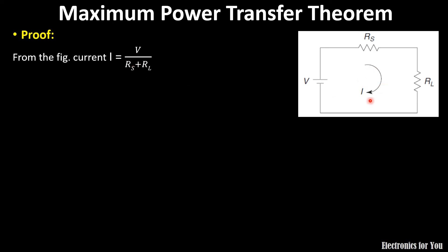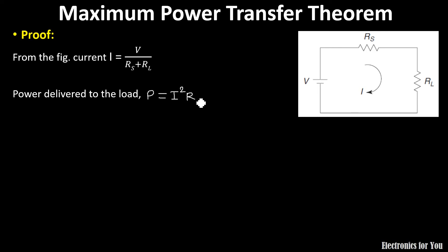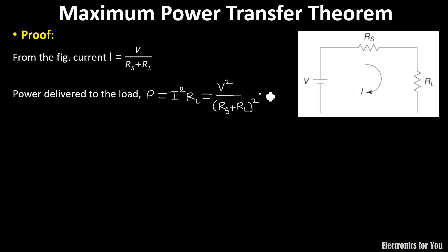Now further we have to find the power delivered to RL. Power equals I squared R — that is the formula for power. So P equals I squared multiplied by RL. We have already calculated the value for I, so substituting: P equals V squared divided by (RS plus RL) whole squared, multiplied by RL. This is the formula for power delivered to the load.